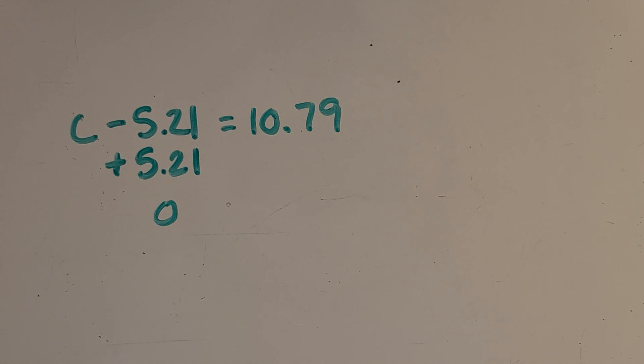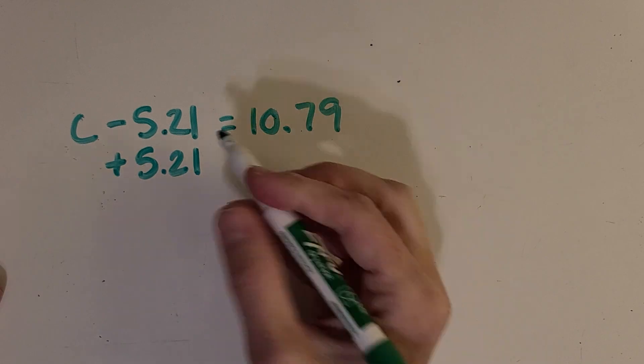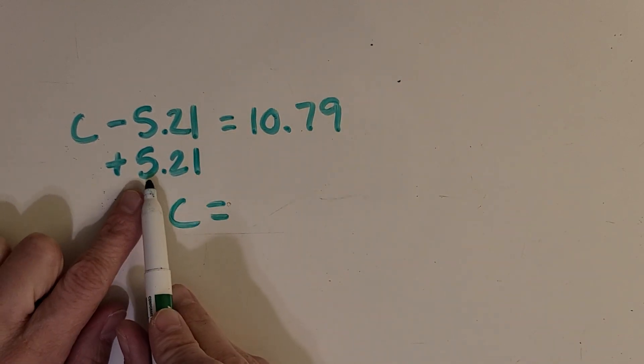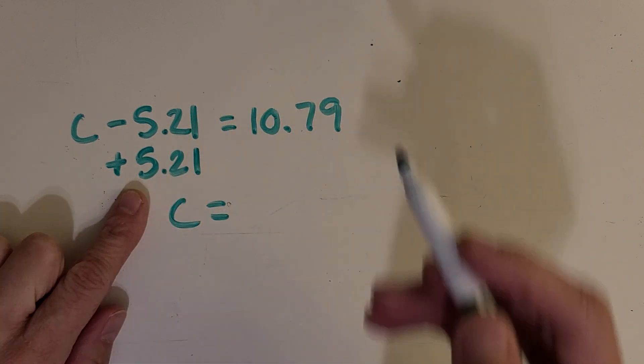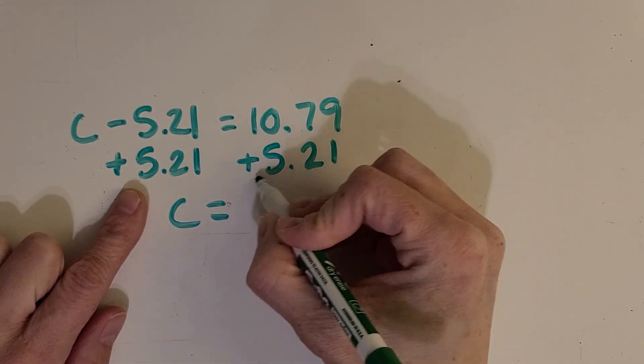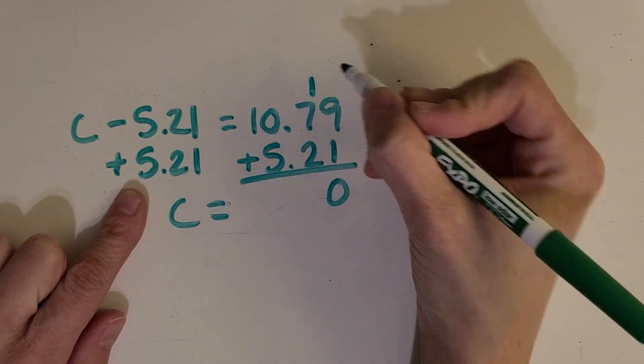And remember that we talked about, you might as well not write the 0 down. It's nothing, so we're just going to put c equals, and then we're going to do that same thing to the other side. You got it. And just work out the algorithm here.